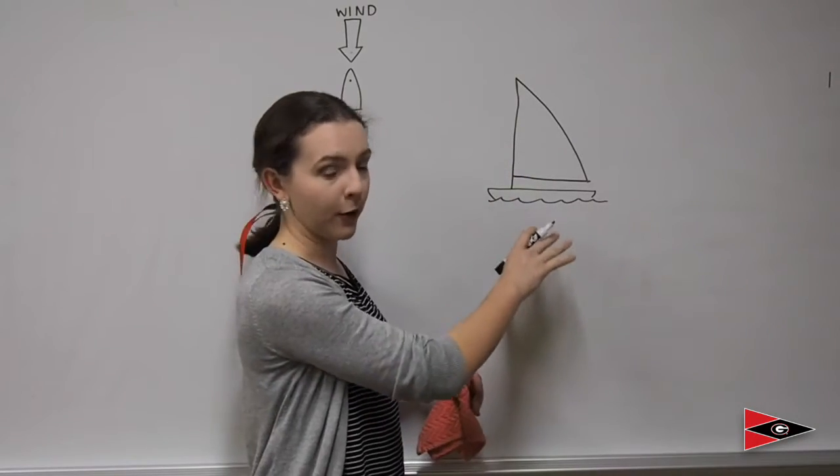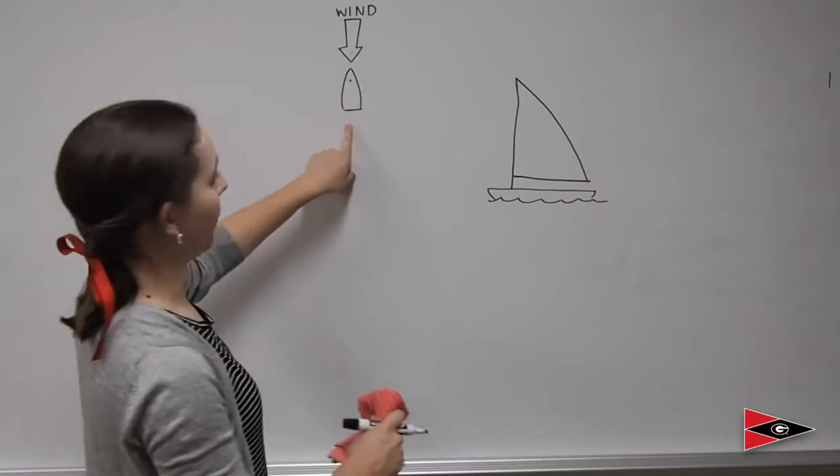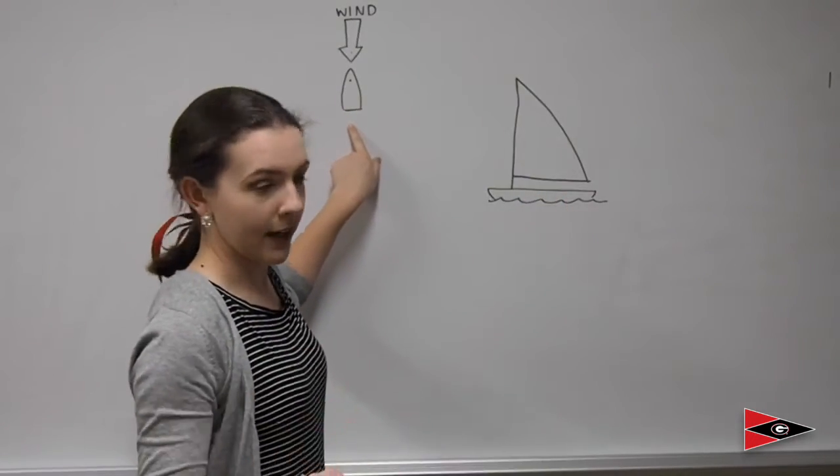But when you're looking at it from an aerial perspective, all you're going to be seeing is the boom. The boom is going to move horizontally across the boat, so that's what we're going to be looking for in our diagram right here.